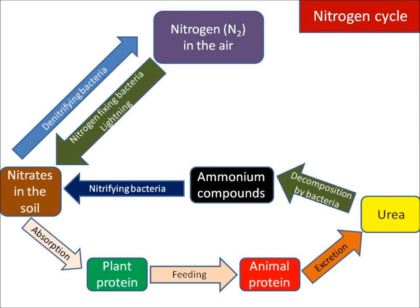This shows the nitrogen cycle. Nitrogen exists in many different forms. It can exist as nitrogen in the air, nitrates in the soil, ammonium compounds, urea, animal protein and plant protein, and it gets moved around from one type to another.